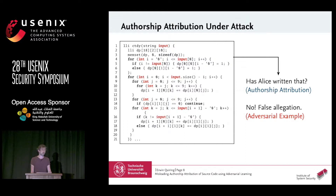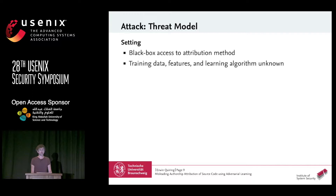Back to the question of whether Alice is our source code author. We now see that Alice has not written the source code — we manipulated some specific patterns. What if the adversary would choose a victim like a real developer or a company? It's essential that source code attribution is accurate and robust, because false allegations could have wide-reaching consequences.